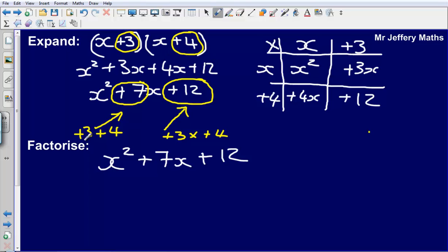We know this because remember that factorise is just the reverse process of expanding. So if it has expanded x squared plus 7x plus 12, then to factorise it we already know that it's going to be x plus 3 and x plus 4.